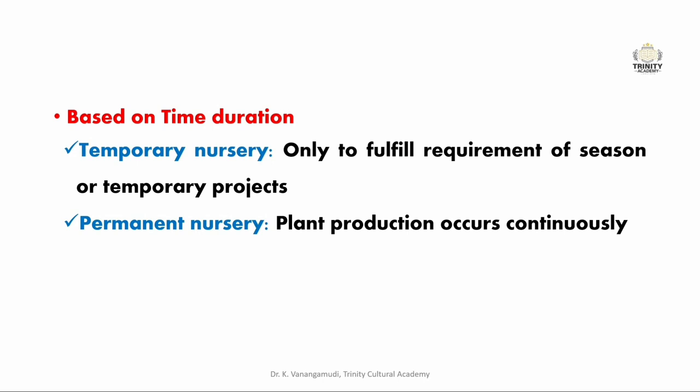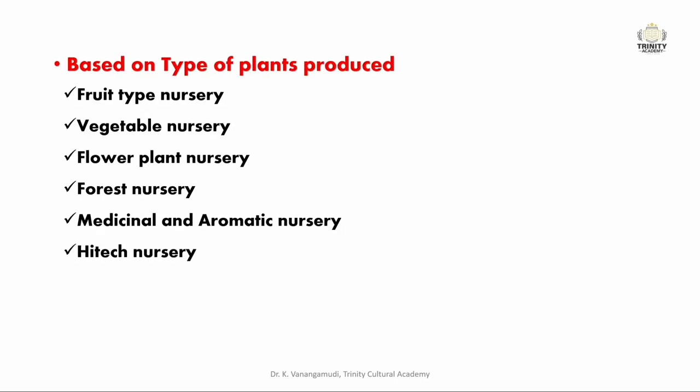Based on type of plants produced, nurseries are classified as fruit nursery, vegetable nursery, flower plant nursery, forest nursery, and medicinal and aromatic nursery — the name itself indicates what type of plants are produced. The last type is high-tech nursery, which deals with tissue culture plants or plants grown in modern greenhouses.